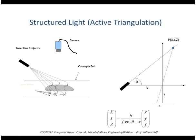Here we see the laser offset horizontally by a distance b and pointing at an angle theta relative to the camera's optical axis. If the camera sees a laser stripe point at image location x, we can solve for the 3D position — capital X and capital Z — and the result is fairly easy to derive.